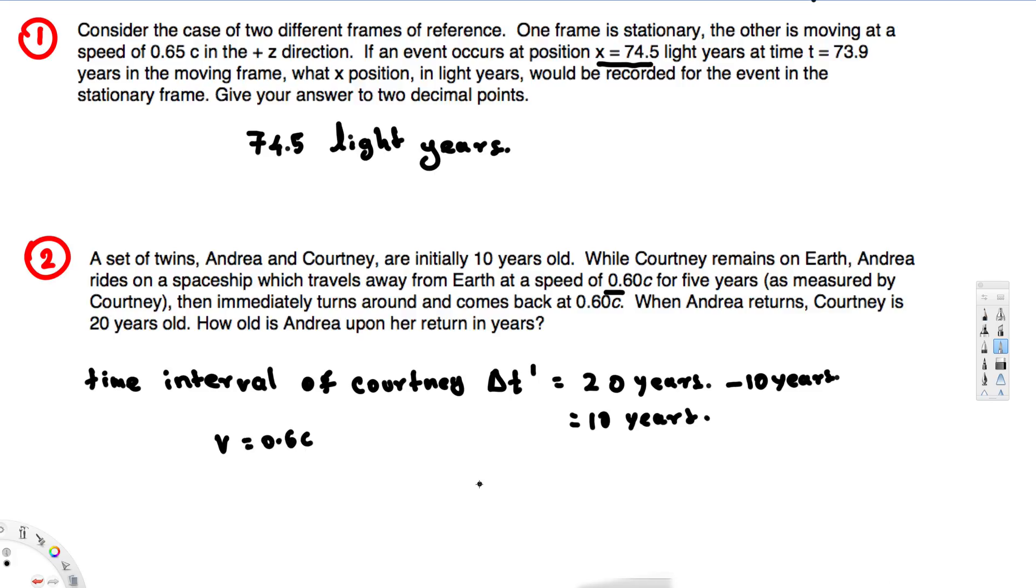Now let's write our Lorentz time dilation equation: delta t = delta t prime × √(1 - v²/c²). Delta t prime is 10 years. So this is 10 years × √(1 - (0.6c)²/c²). If you calculate this, you get 10 years times √(1 - 0.36), which gives 10 × 0.8 = 8 years.